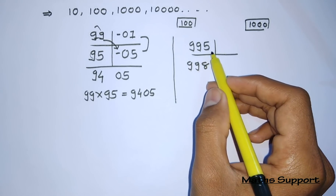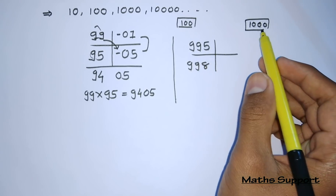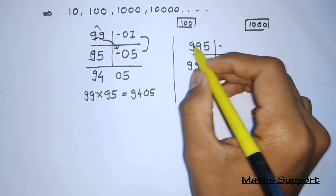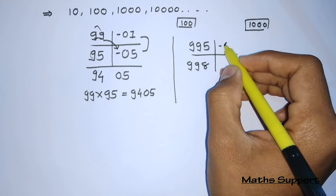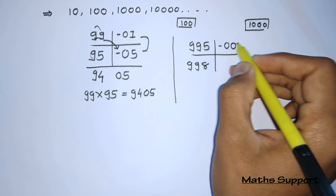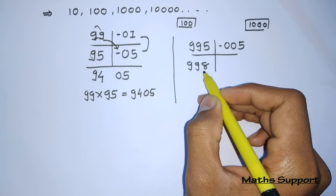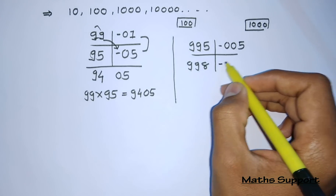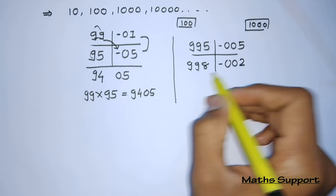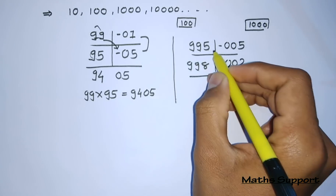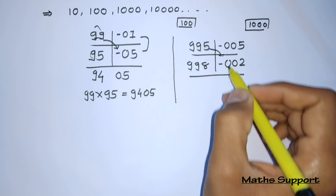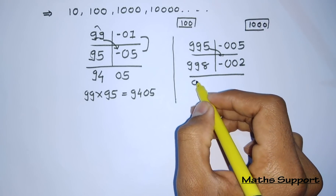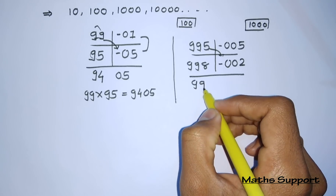995 is 5 less than 1000, so we write it in 3 digits: 005. And 998 is 2 less than 1000, so we write it in 3 digits: 002. Now we add this cross. 995 minus 2 equals 993.